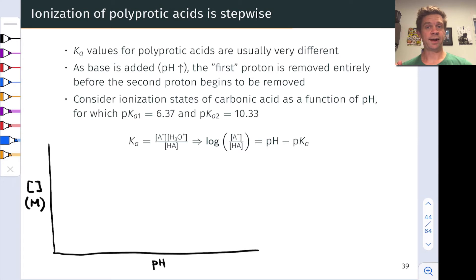Ka values for polyprotic acids are usually very different. This is because loss of a proton changes the molecular structure quite dramatically by essentially decreasing the charge of the molecule by one unit.